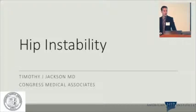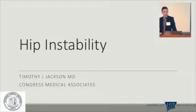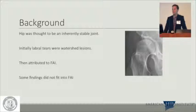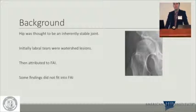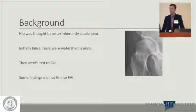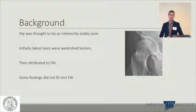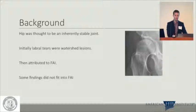A bit of background, reiterating what was discussed yesterday: the hip was thought to be an inherently stable joint, and all labral tears were watershed lesions. Most of this was attributed to FIRI. But as Dr. Dobbs said yesterday, some of these findings didn't fit and don't fit when you're talking to patients.